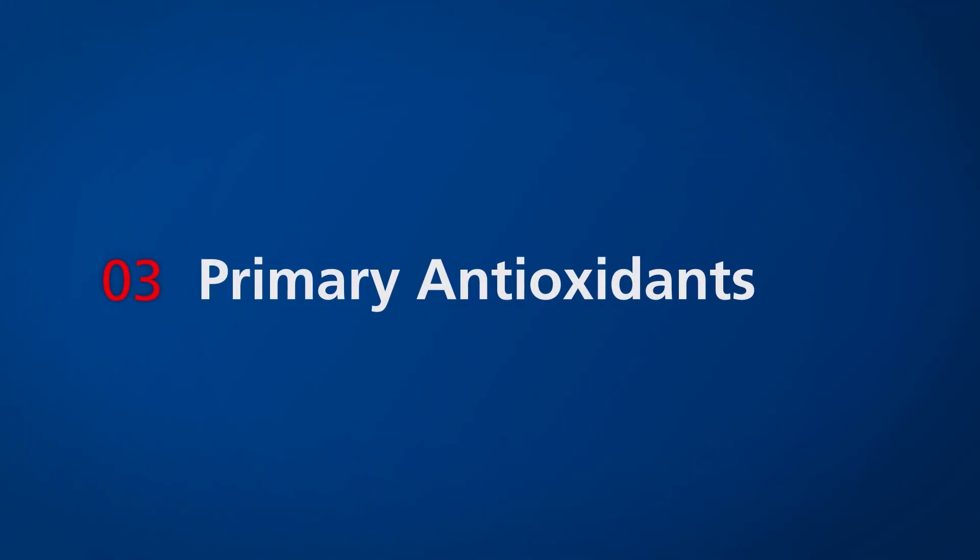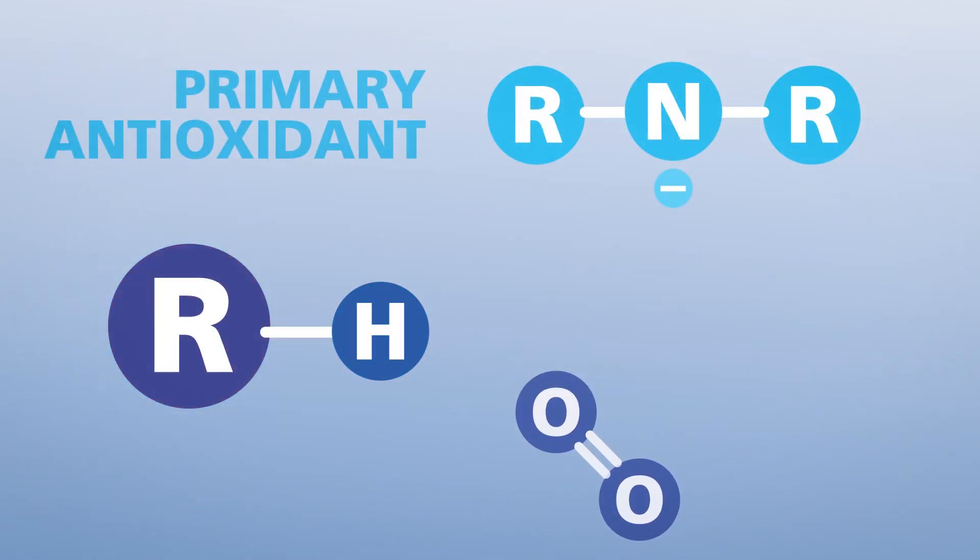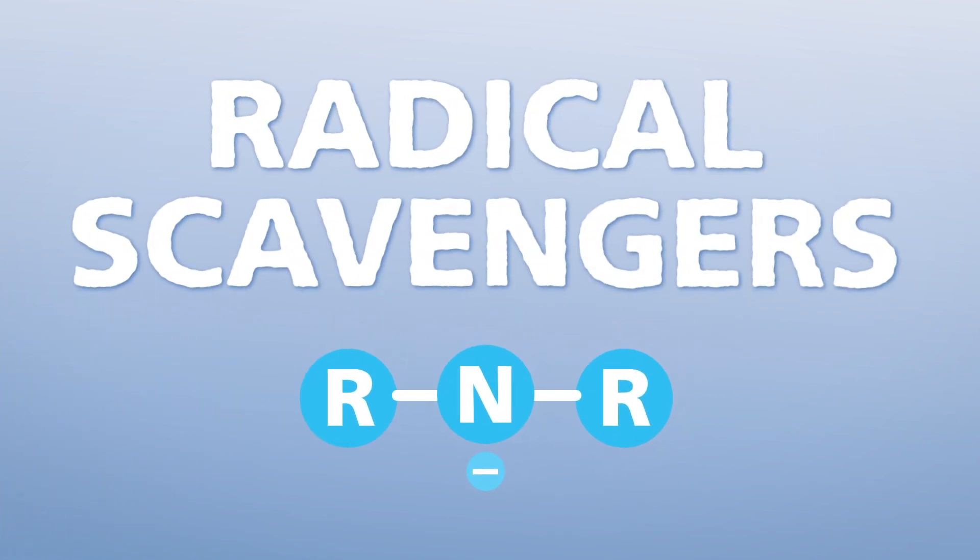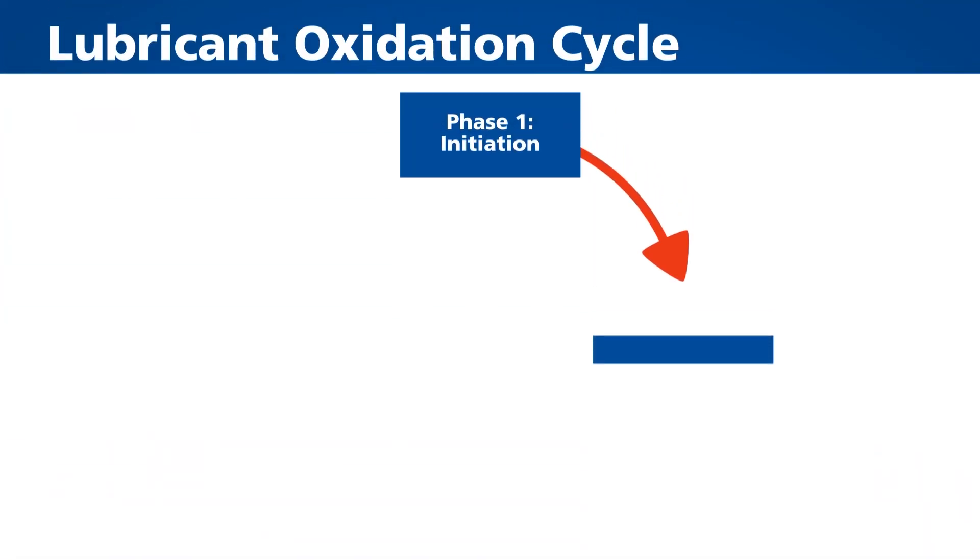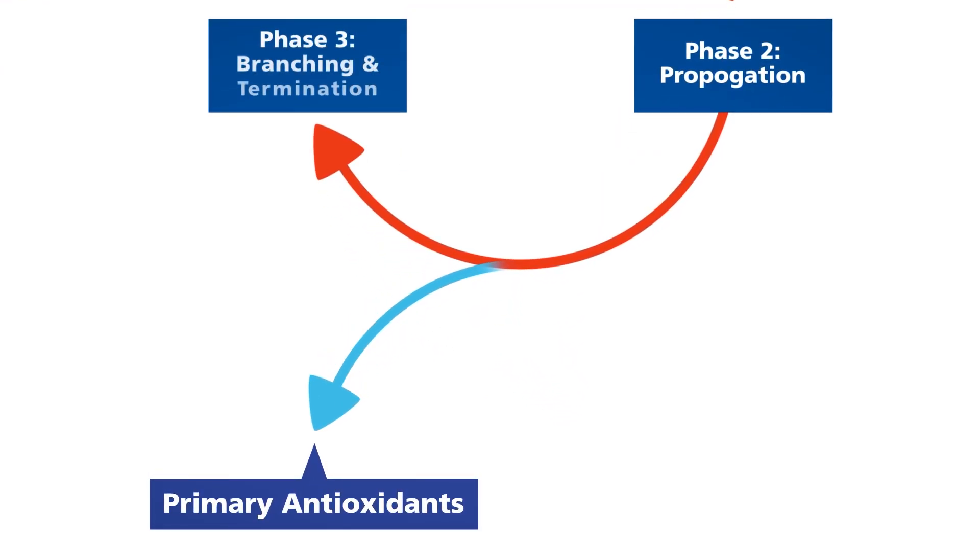Primary antioxidants react quickly with the free radicals during the propagation phase. These are commonly referred to as radical scavengers. Primary antioxidants form new, stable radicals, which slow down the degradation process.